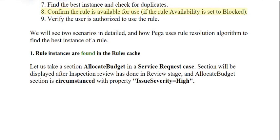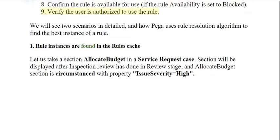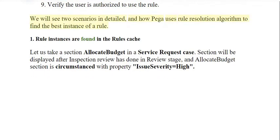Step 8: confirm the rule is available for use — if the rule availability is set to blocked. Step 9: verify the user is authorized to use the rule. We will see two scenarios in detail and how PEGA uses the rule resolution algorithm to find the best instance of a rule.